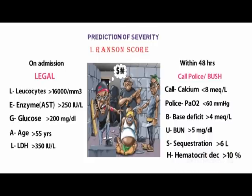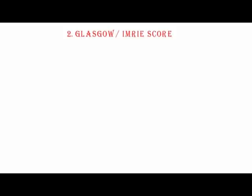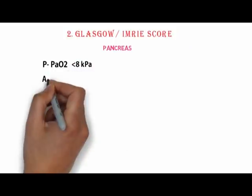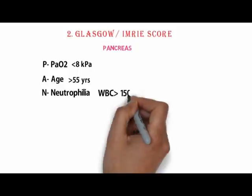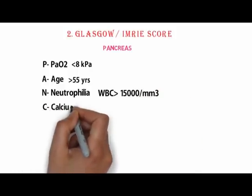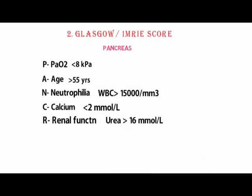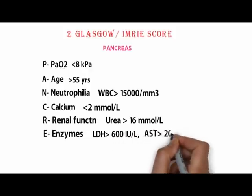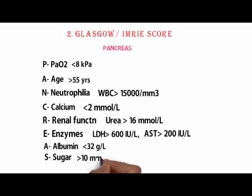The second score for severity is the Glasgow or IMRIE score, remembered by the mnemonic PANCREAS: P for PaO₂ less than 8 kPa, A for age more than 55 years, N for neutrophilia with WBC more than 15,000 per mm³, C for calcium less than 2 mmol/L, R for renal function assessed by urea more than 16 mmol/L, E for enzymes — LDH more than 600 IU/L and AST more than 200 IU/L, A for albumin less than 32 g/L, and S for sugar — blood glucose more than 10 mmol/L.